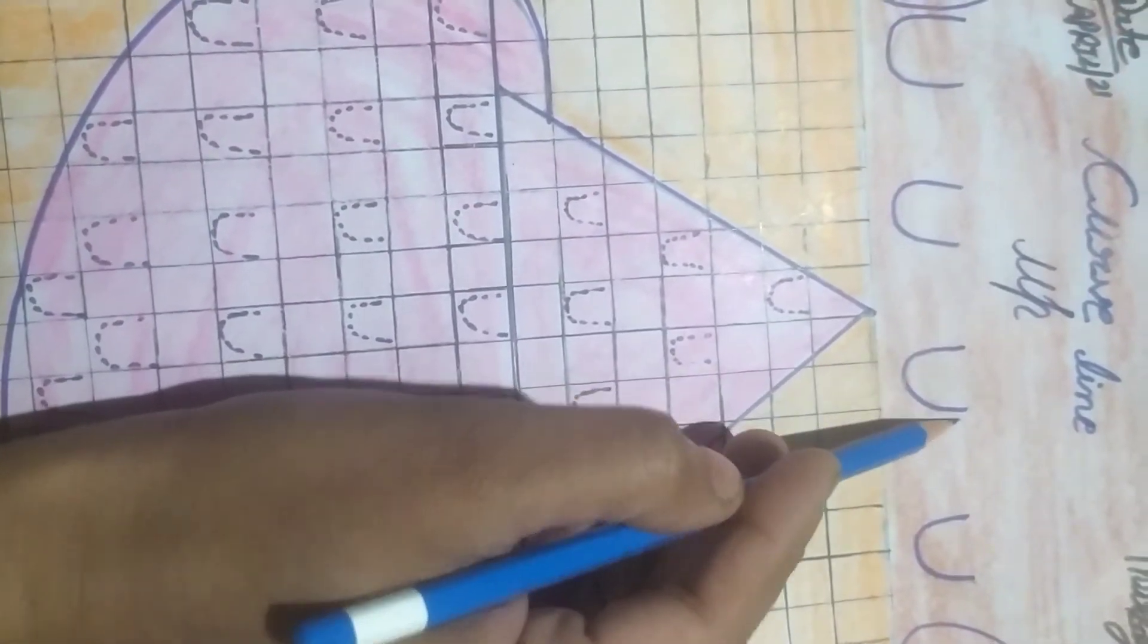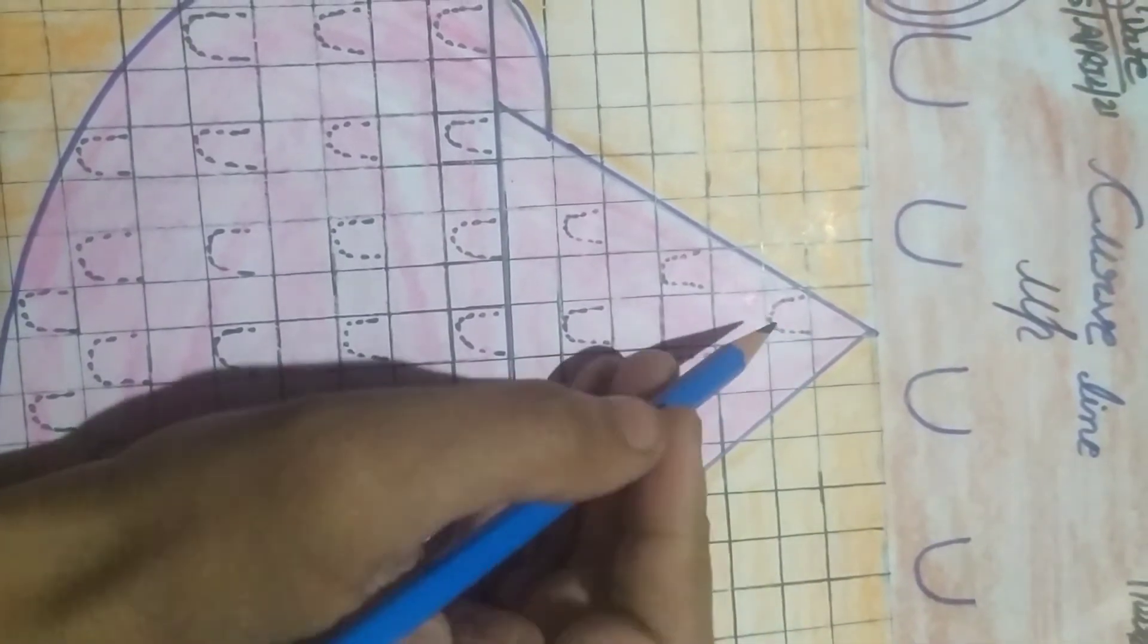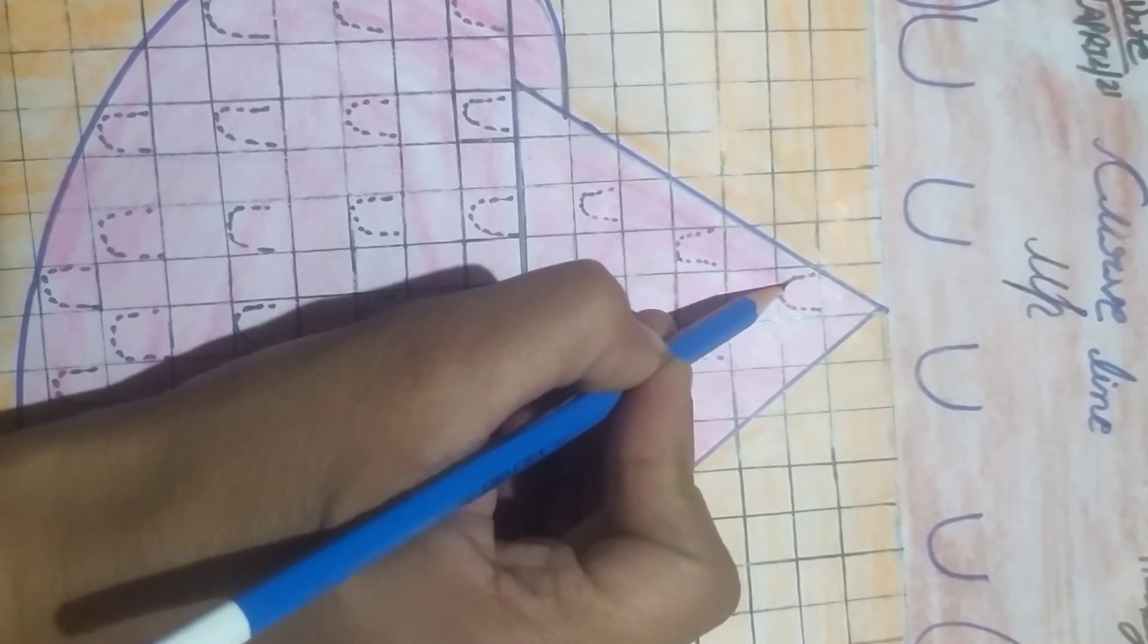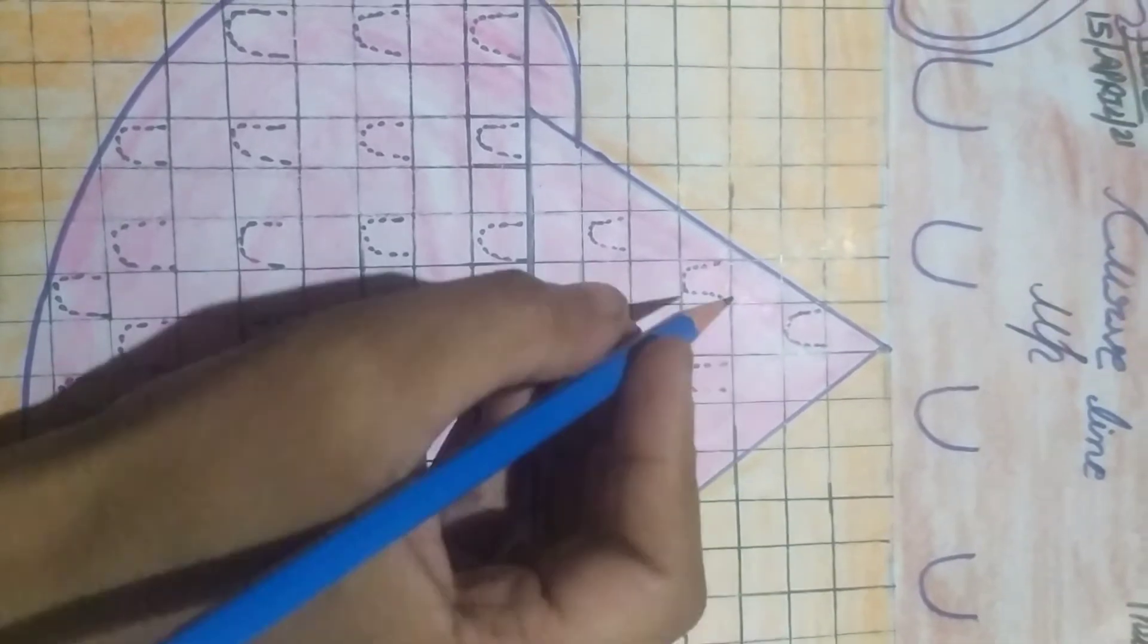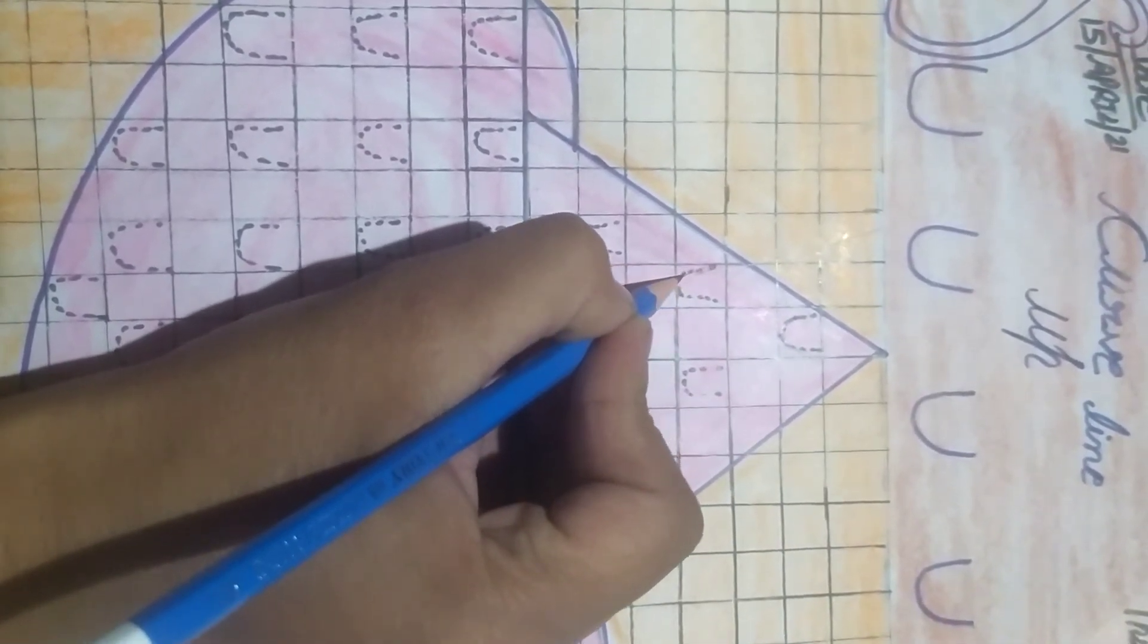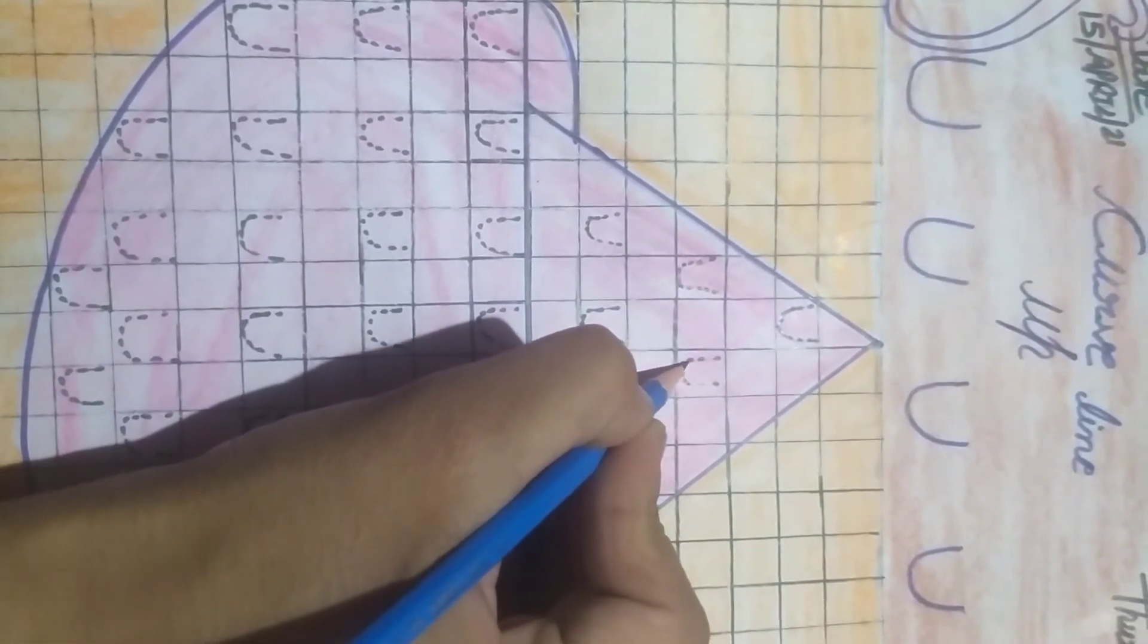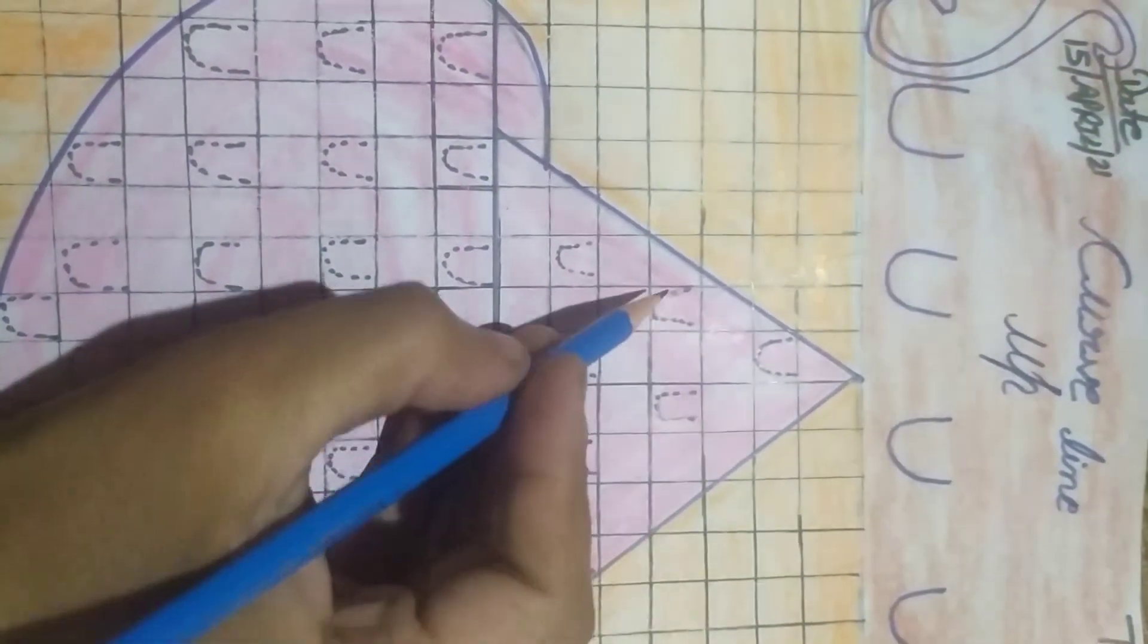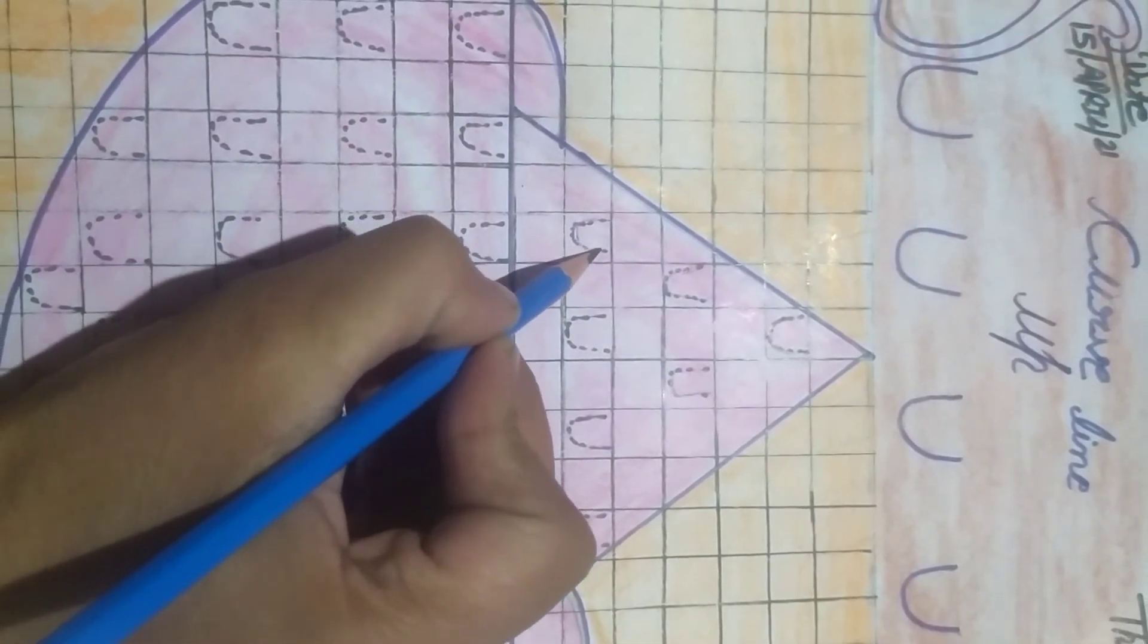यह, यह देखिए. Okay, अब ऐसे ही आपको यहाँ पर यह complete करना है, dot dot दी हुई है. इनको आपको मिलाके धीरे धीरे और यह ऐसे आपको complete करना है. Okay, ऐसे. ऐसे.